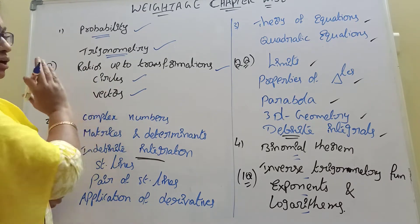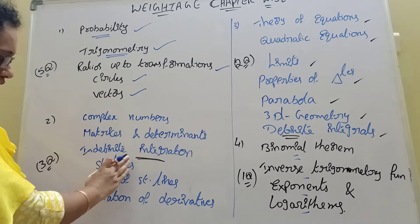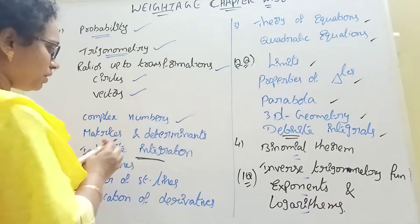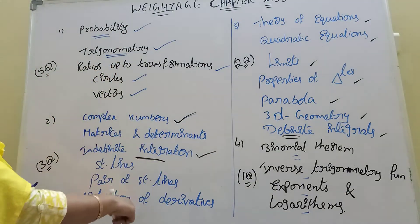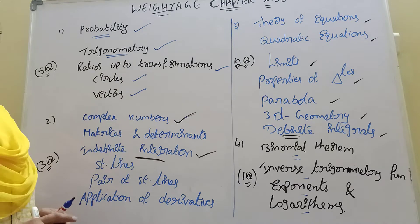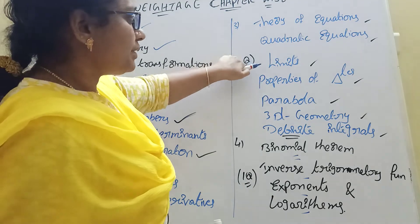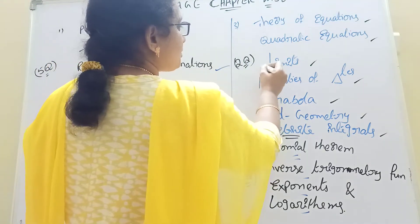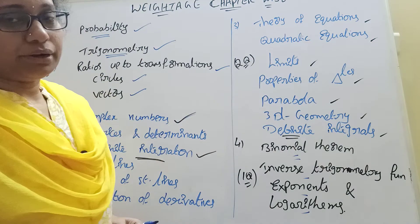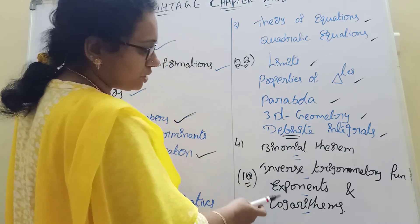That is the third equation. Eight is second year. Limits which is first year. Properties of triangles which is first year. Remaining second year. The binomial theorem is second year. Exponents, logarithms, series.